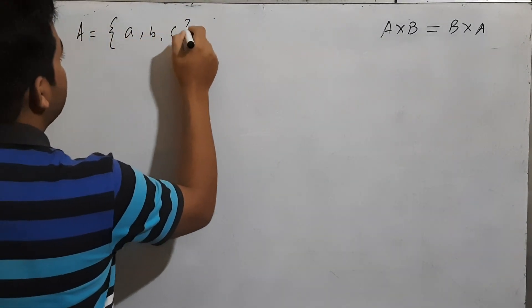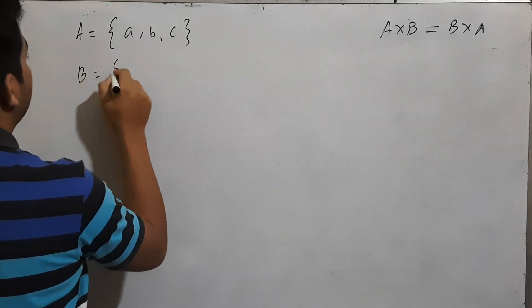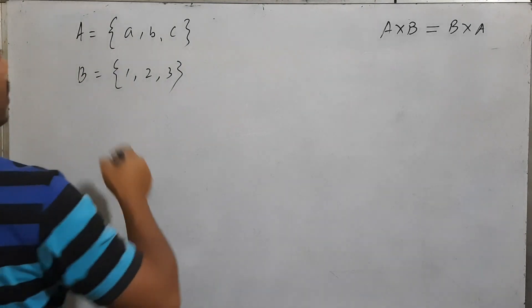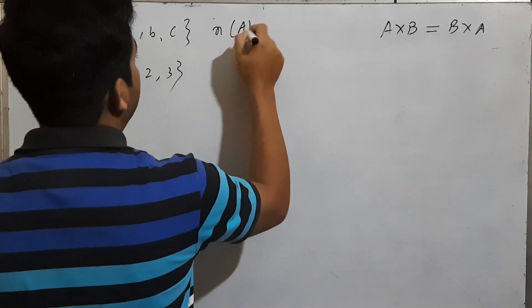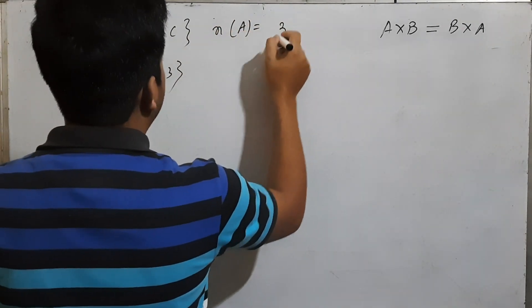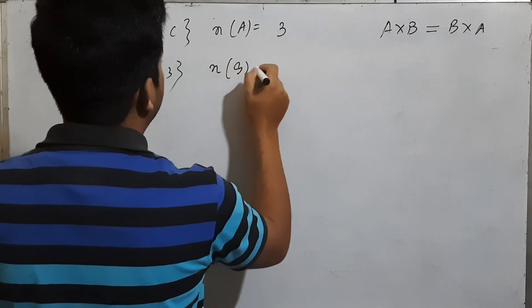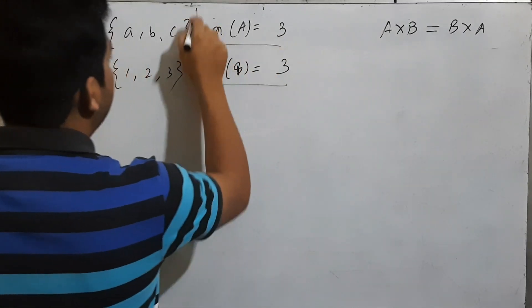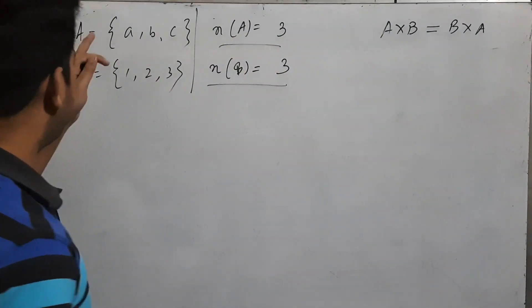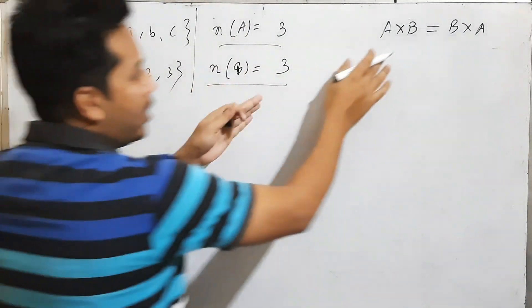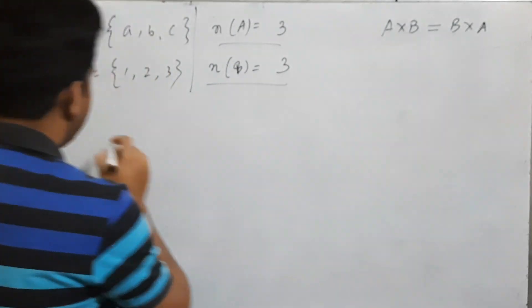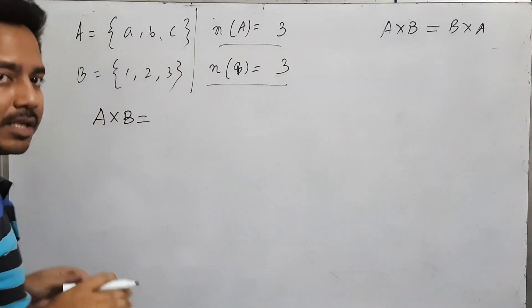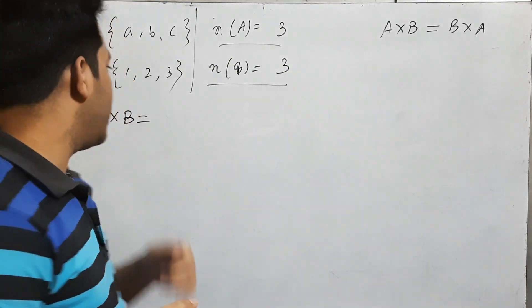All these are 1, 2, 3. The number of elements in A is 3 and the number of elements in B is 3. This is what we call A cross B, by A into B. This is what we call the Cartesian product. What is this?